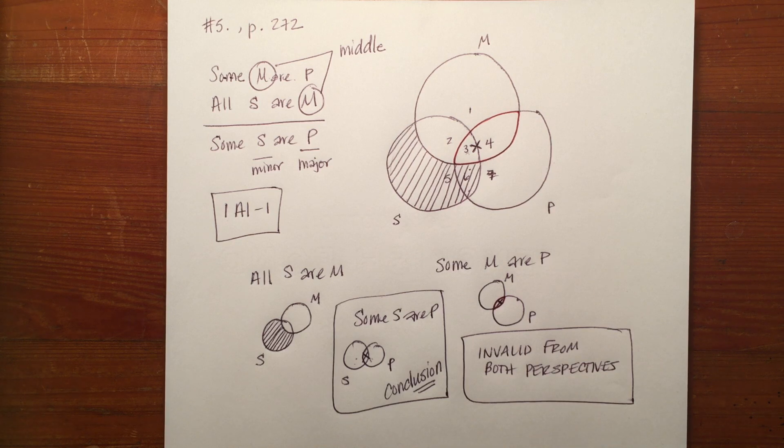In the next video I'll show you an example of a Venn diagram that has two particular premises.